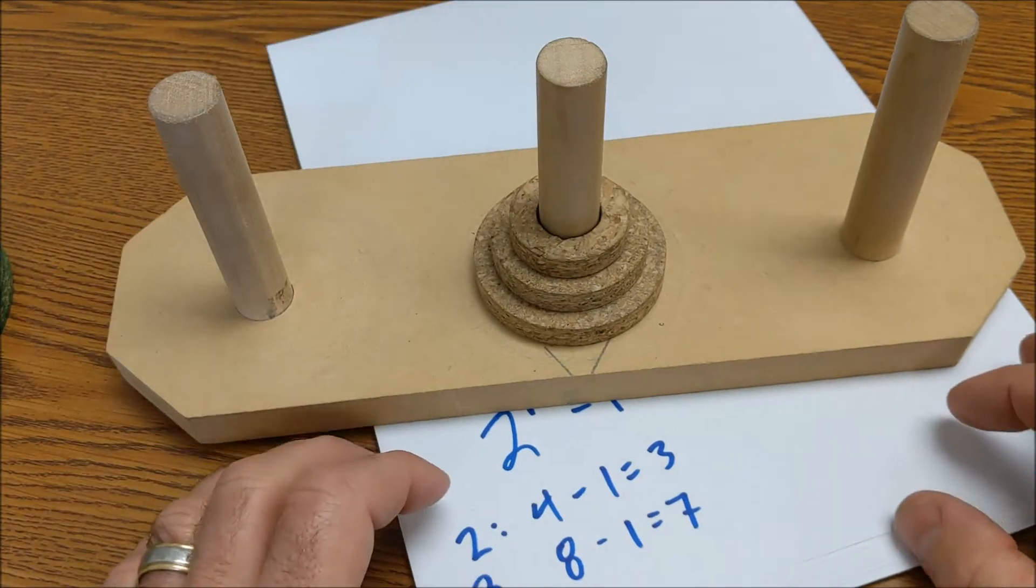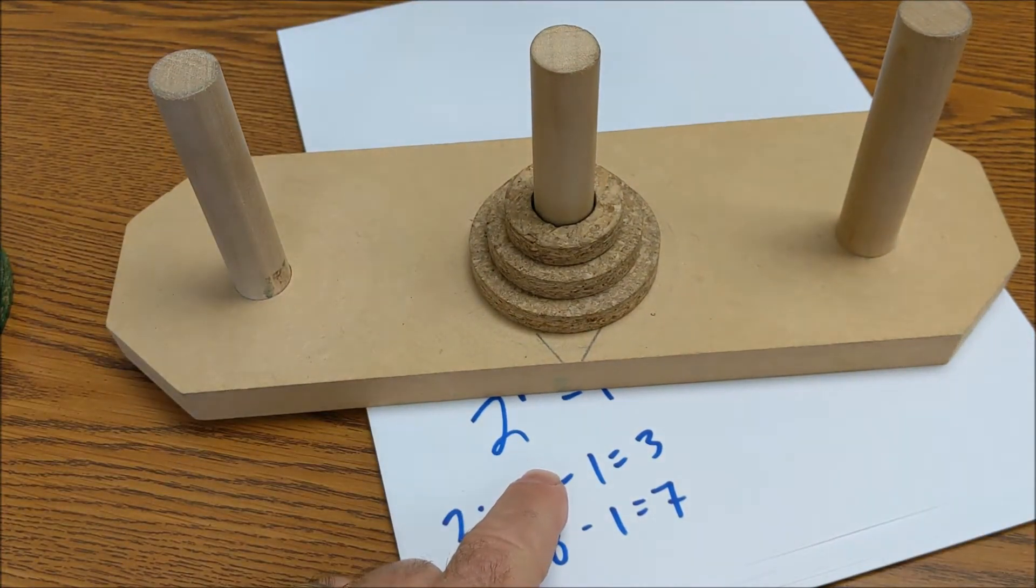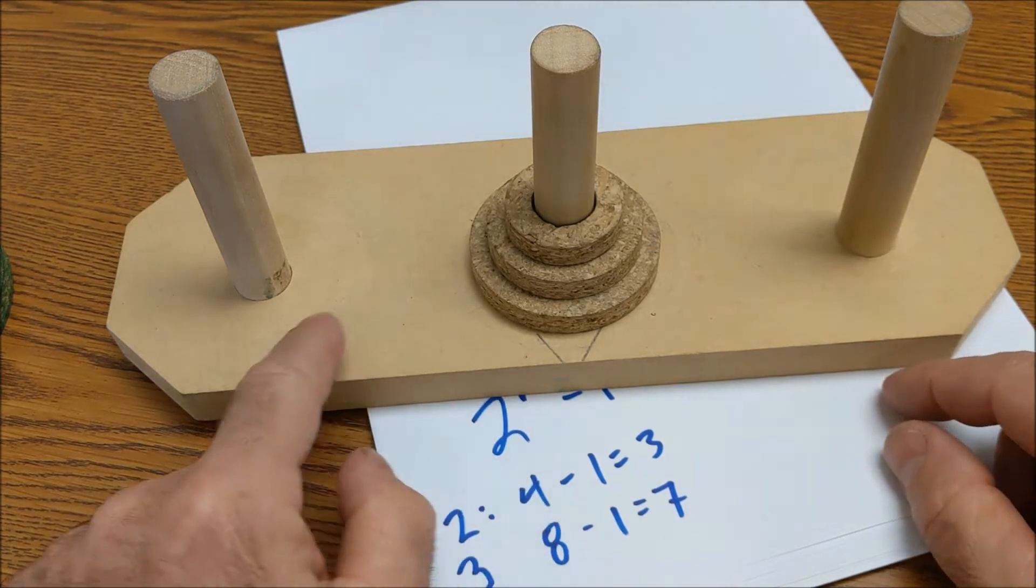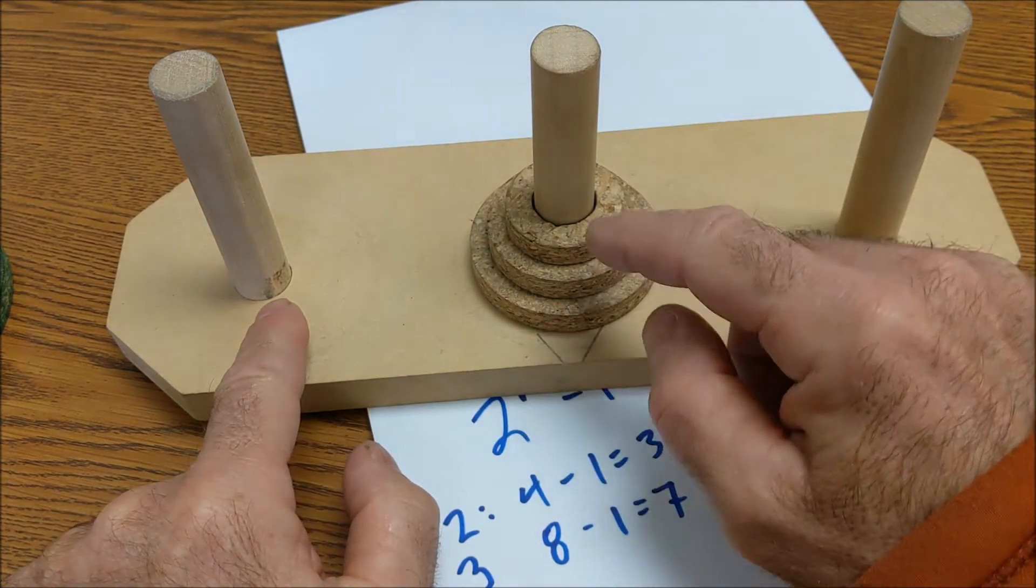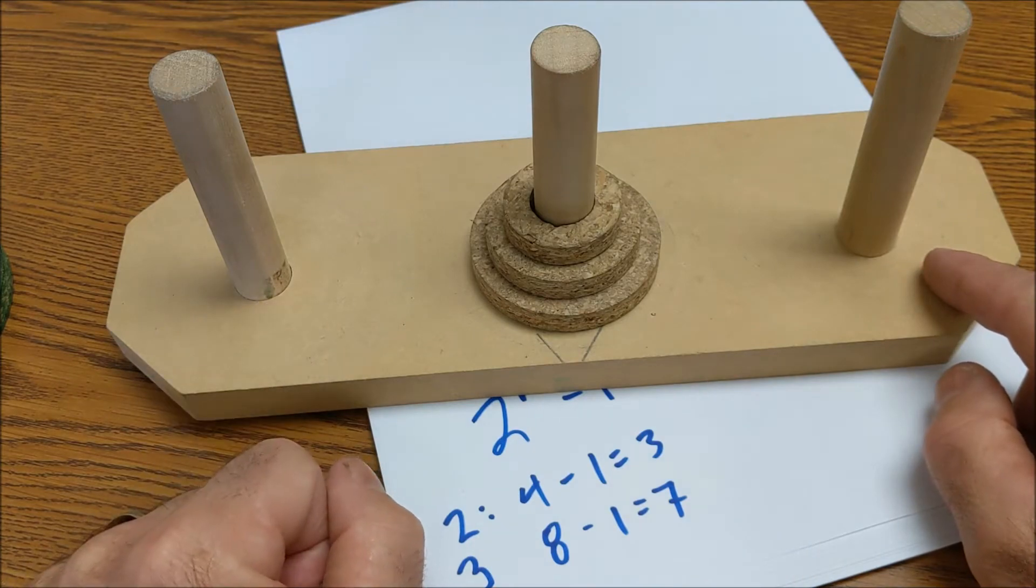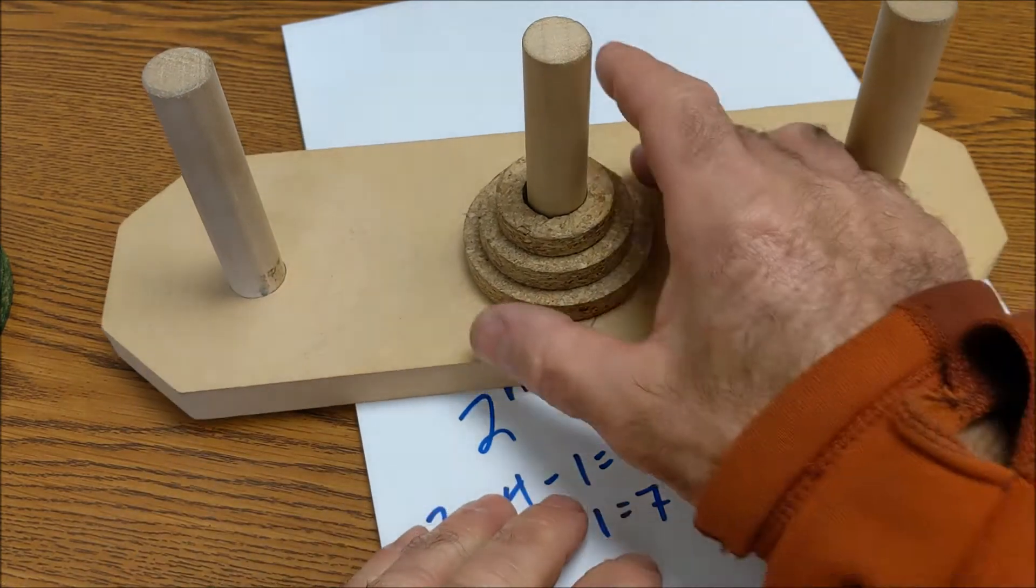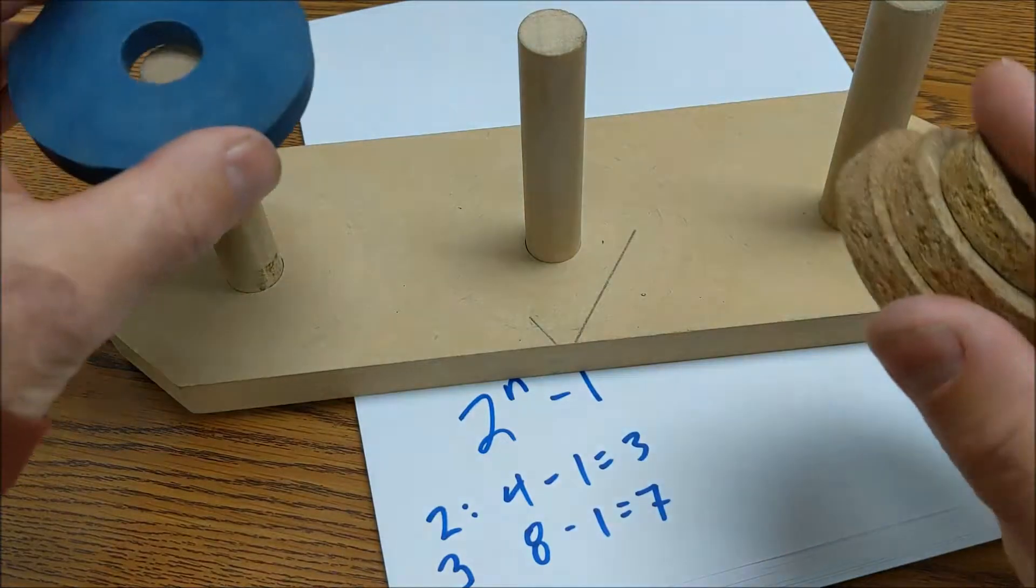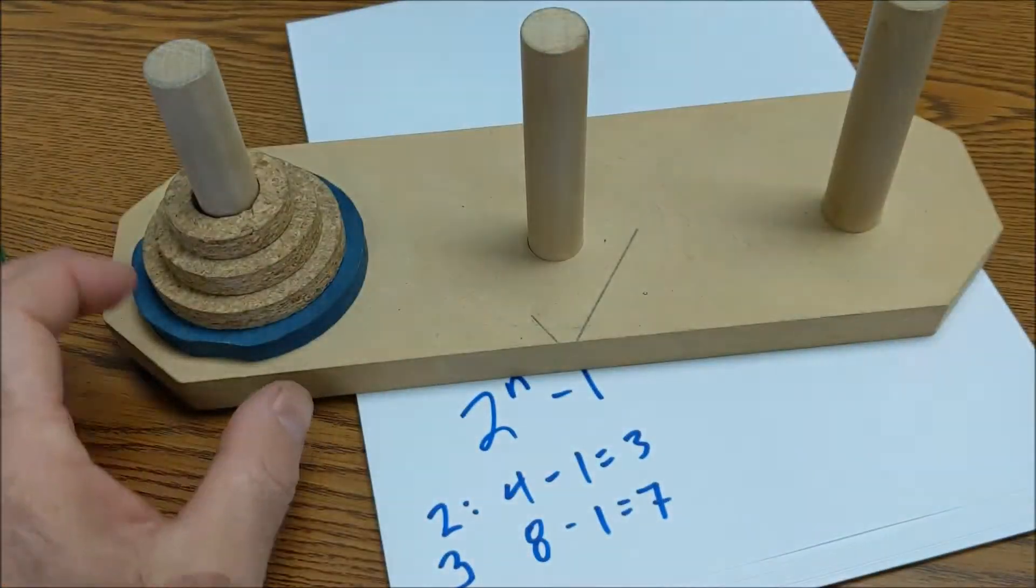So the minimum number of moves is 2 to the n minus 1. And the only two rules are that there's no larger disk ever placed on a smaller disk, and I only move one disk at a time. Let me do this one more time with four disks, and then I'll show you my algorithm for how I do this.